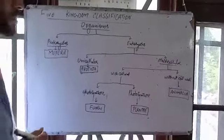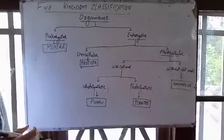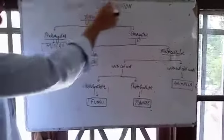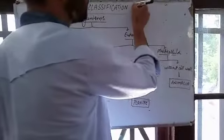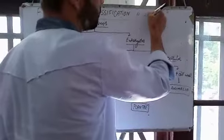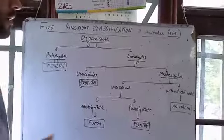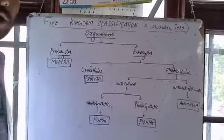Hello dear students. Today we learn about the five kingdom system of classification, or five kingdom classification. It was given by Whittaker in 1969.